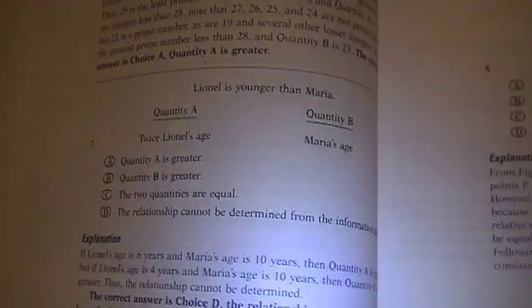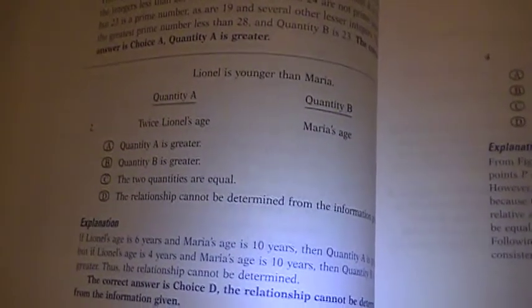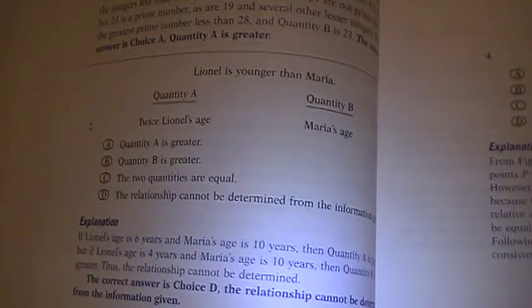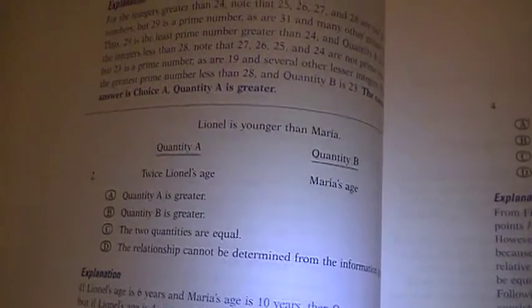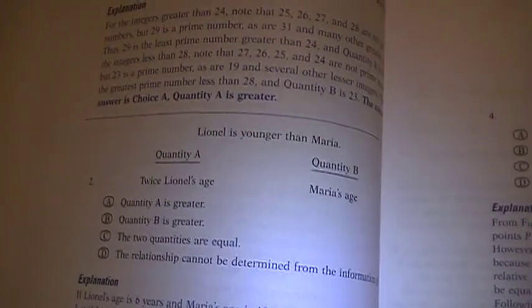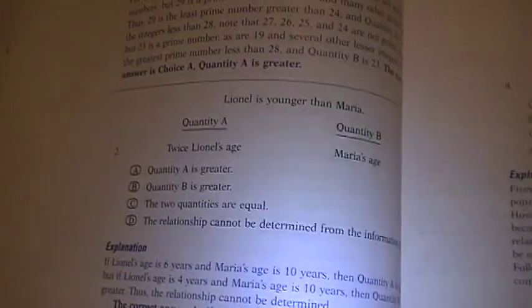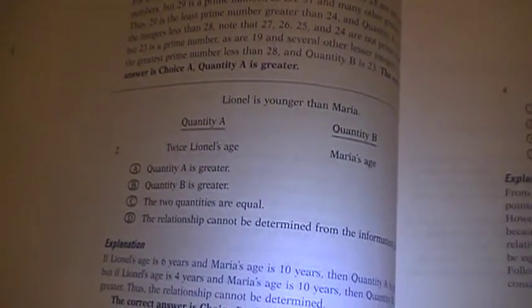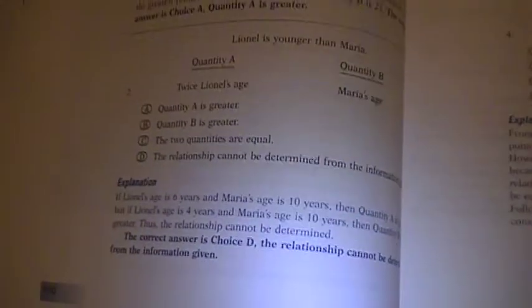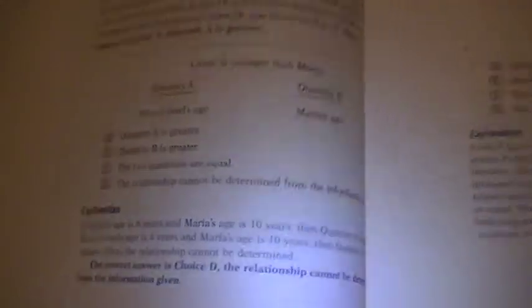Number two is actually looking at something that's ambiguous. One of the answers here is the relationship cannot be determined. This says Lionel's younger than Maria. Which is larger: twice Lionel's age or Maria's age? The possible choices are A is greater, B is greater, they're equal, or can't be determined. This one is a can't be determined.